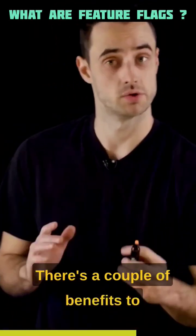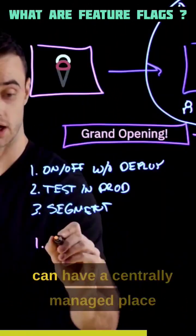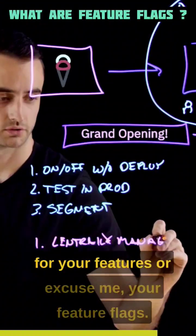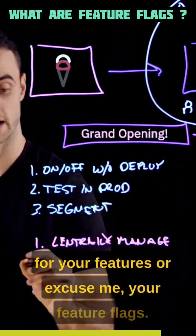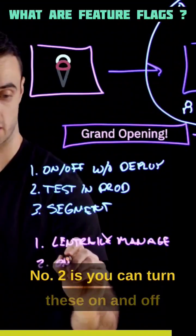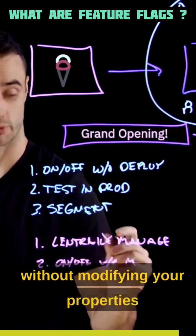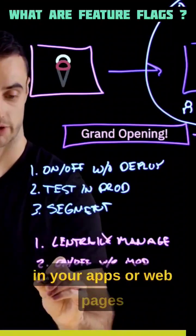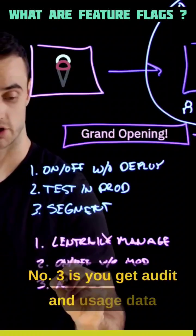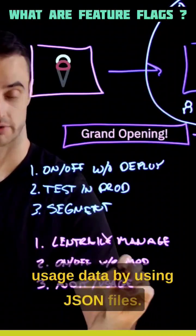There are a couple of benefits to using a Feature Flags service. Number one, you can have a centrally managed place for your feature flags. Number two, you can turn these on and off without modifying your properties in your apps or web pages. And number three, you get audit and usage data, which is harder to get when using JSON files.